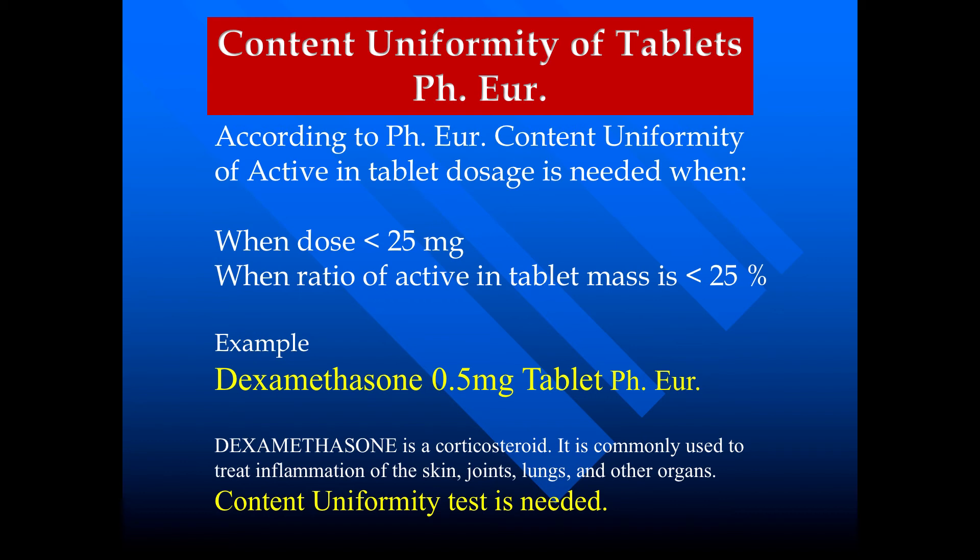Dexamethasone is a corticosteroid. It is commonly used for the treatment of inflammation of the lungs. It is a very potent drug. In this case, we need to perform the content uniformity test.